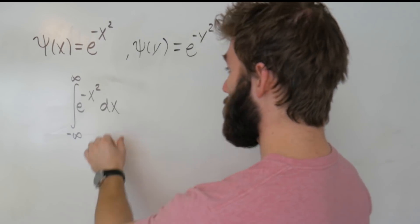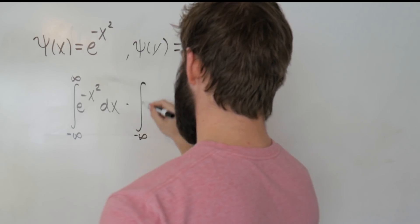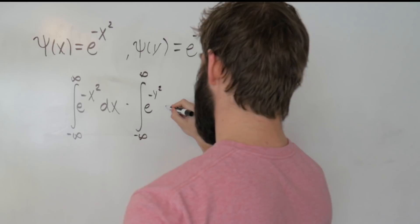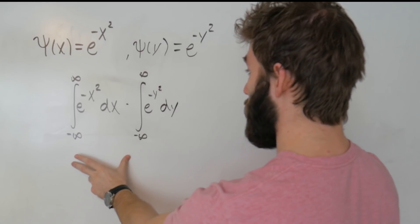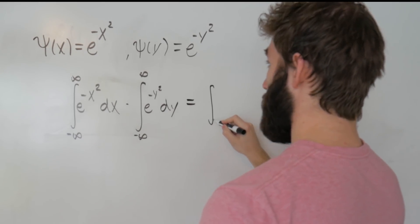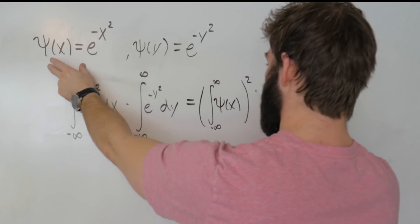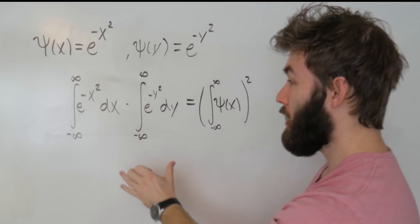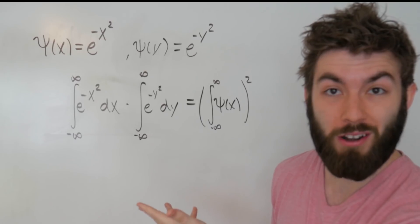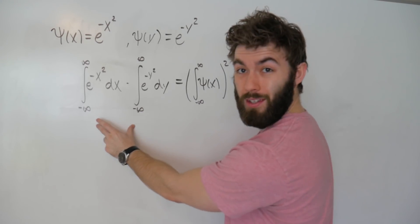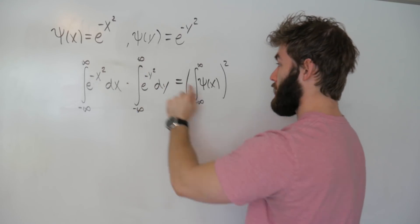What I'm getting at is: if we multiply our original integral times the integral of ψ(y) — that is, the integral from negative infinity to infinity of e to the minus y squared dy — since both have the same functional form and are integrated over the same space, this is the same as the integral of ψ(x) from negative infinity to infinity, squared. We're going to solve it as a product of two integrals, but remember it corresponds to the original integral squared.